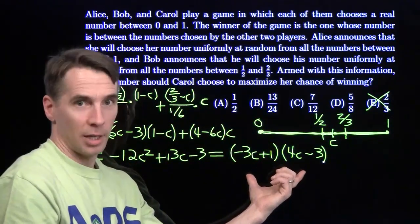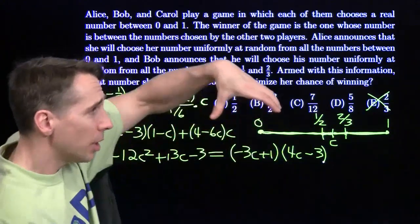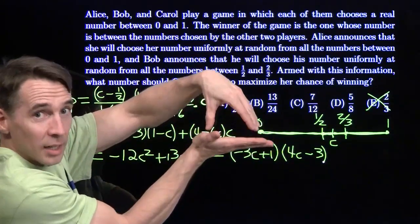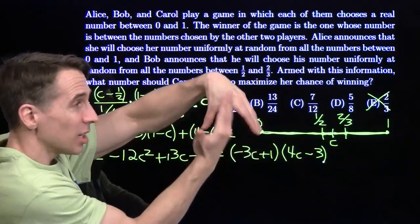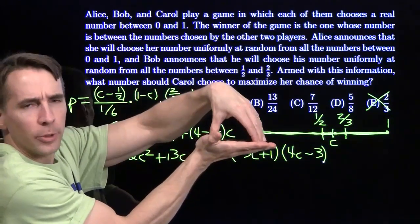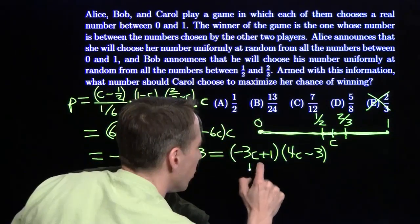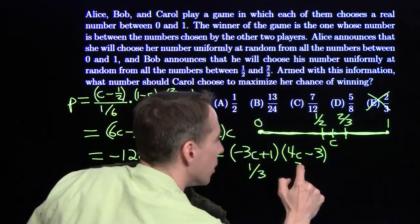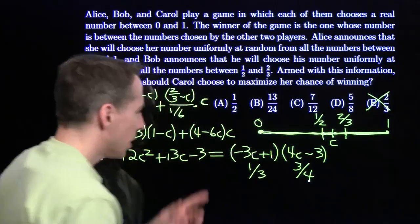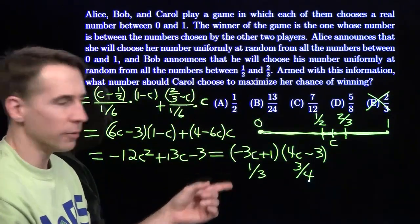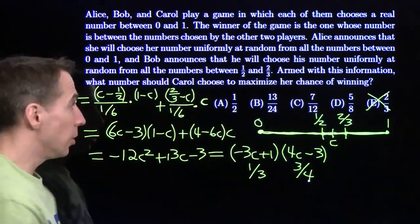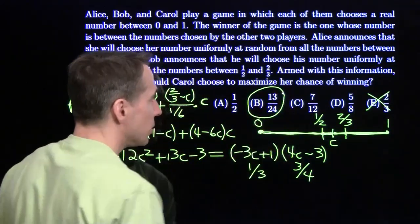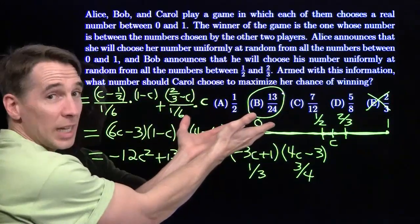The roots are going to tell me where my vertex is, because the vertex is exactly between the roots. I don't need to complete the square. The roots here are 1/3 and 3/4. That 1/3 is 8/24, and 3/4 is 18/24. Right between those two is 13/24. Choice B, and we're done.